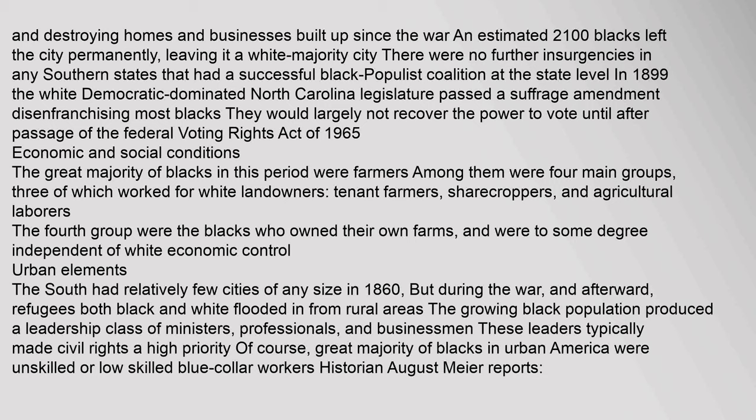The great majority of blacks in this period were farmers. Among them were four main groups, three of which worked for white landowners: tenant farmers, sharecroppers, and agricultural laborers. The fourth group were blacks who owned their own farms and were to some degree independent of white economic control. The South had relatively few cities in 1860, but during and after the war, refugees both black and white flooded in from rural areas. The growing black population produced a leadership class of ministers, professionals, and businessmen who typically made civil rights a high priority.